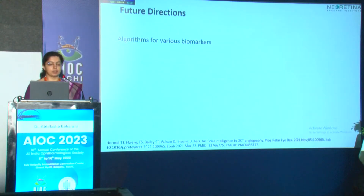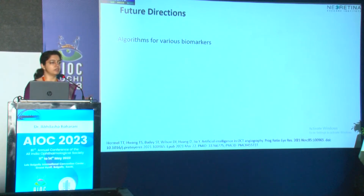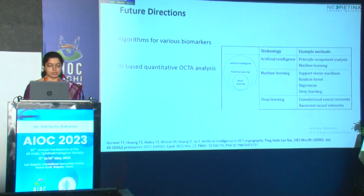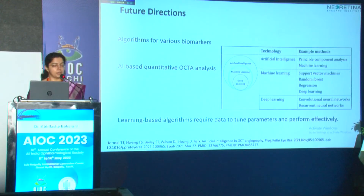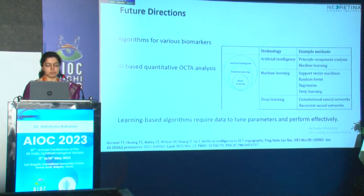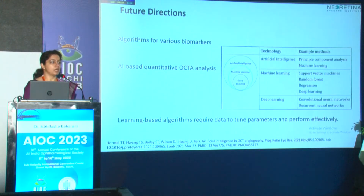Future directions: when we have large datasets, we can make algorithms for various biomarkers — like inflammatory CNVMs, retinal ischemia, or choroidal ischemia. Whether we like it or not, we will have to know about AI-based quantitative OCTA, which is mostly based on machine learning. Learning-based algorithms require data to tune parameters and perform effectively. For example, DRCRnet is actually capturing diabetic retinopathy and doing this quantitative OCTA.